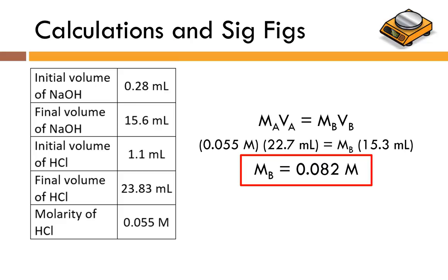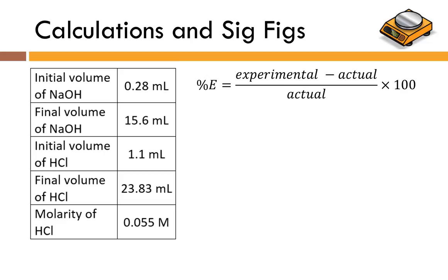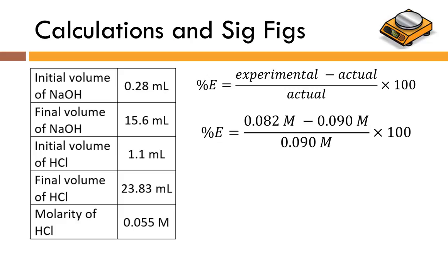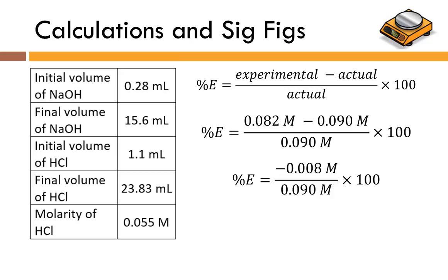Last, and most complicated from a sig fig perspective, is percent error. Percent error is: (experimental value minus actual value) divided by the actual value, times 100. We calculated a concentration of 0.082 M for the sodium hydroxide; the actual molarity is 0.090 M. First, we do the subtraction: applying sig fig rules to the decimal places, we get −0.008 M. Dividing −0.008 by 0.090 and multiplying by 100: the numerator has one sig fig, the denominator has two, so the answer has one sig fig. The times 100 is a definition (the definition of percent), so we don't worry about sig figs there. The percent error is −9%.